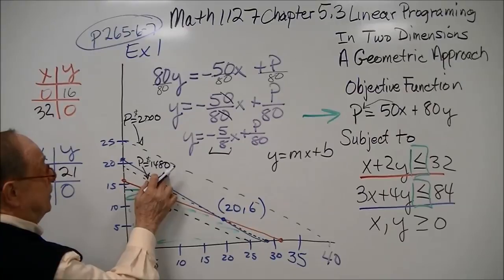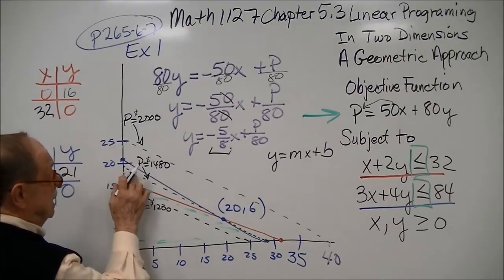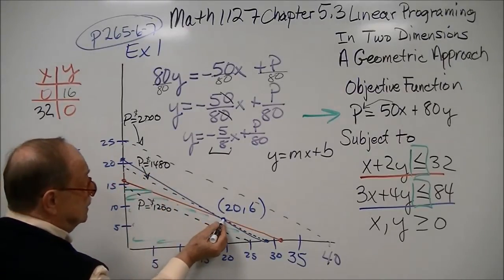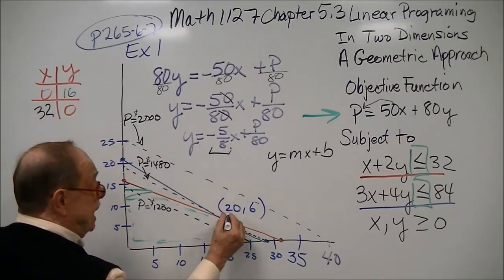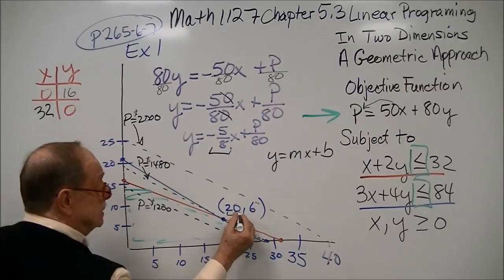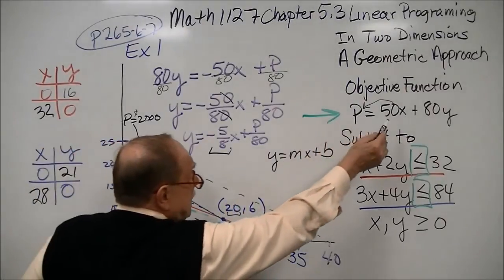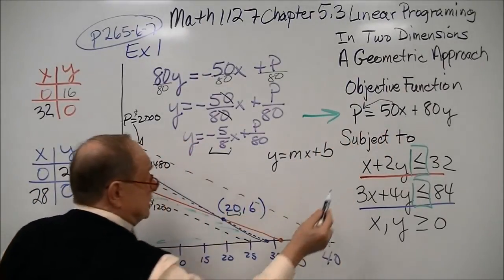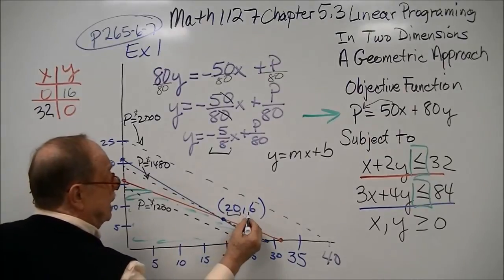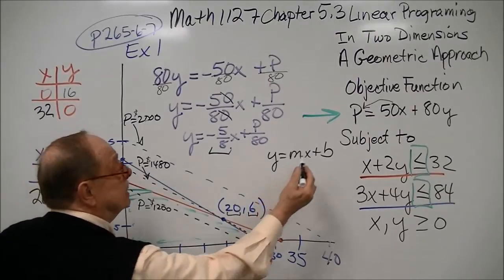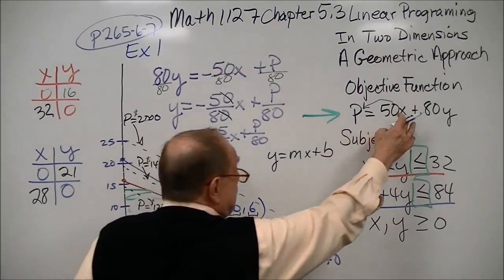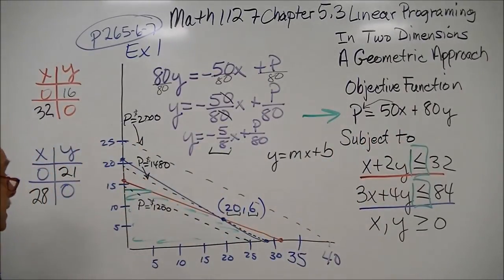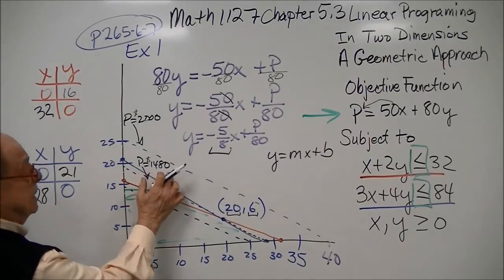But if I put in 1,480, and you might wonder where I got that, it actually goes right through this particular point here. And in this case, the x is 20, so 20 times 50, and the 6 is our y, so 80 times 6. That should give us the 1,480.